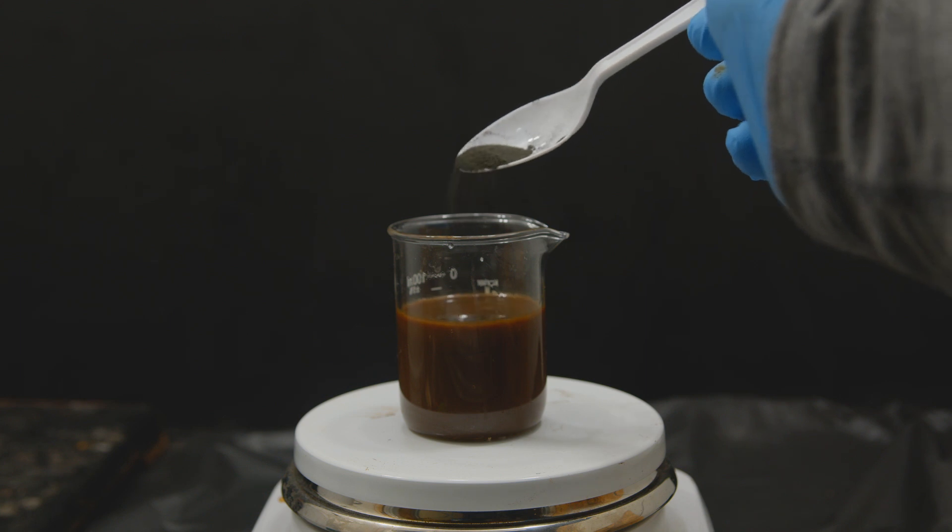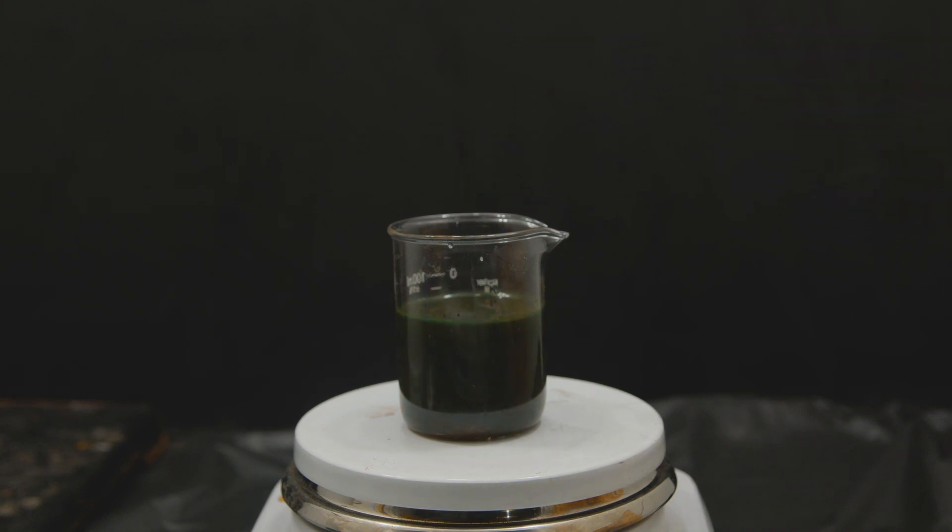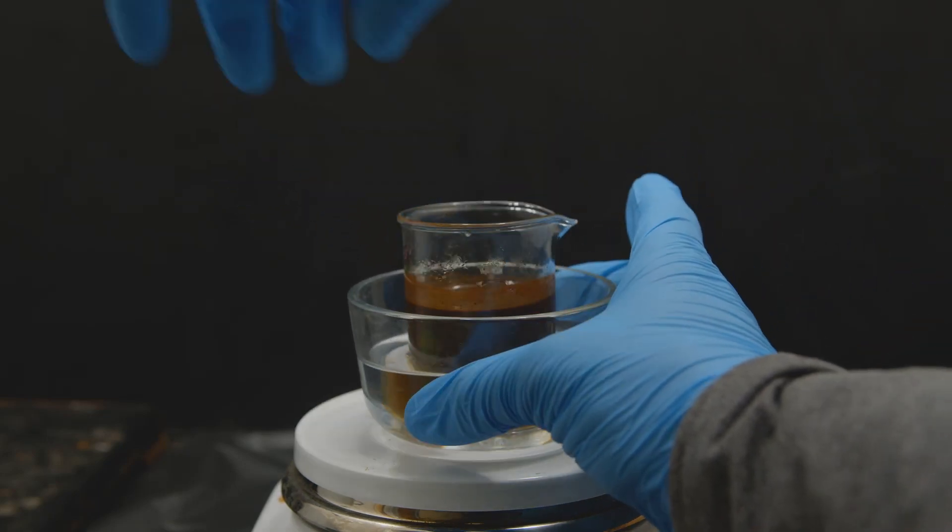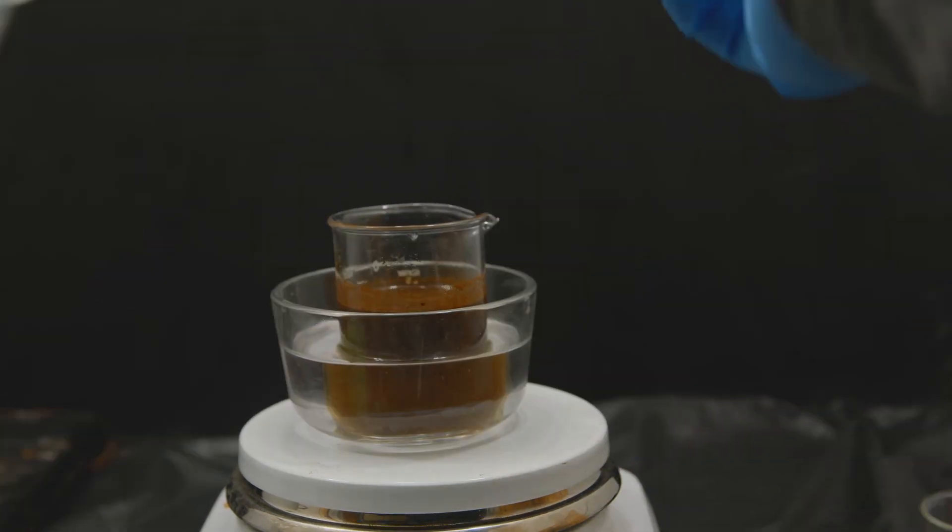You'll notice when I add the purple potassium permanganate it quickly changes to blue and then the blue starts to go back to brown. This color shift happens when the manganese ions change oxidation states.